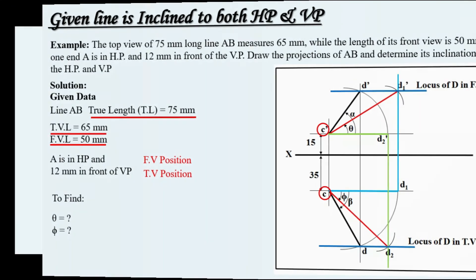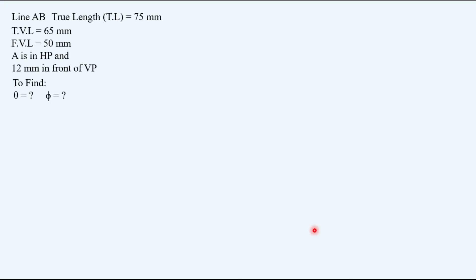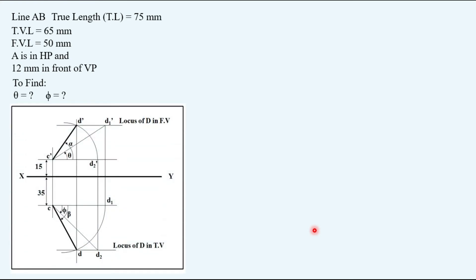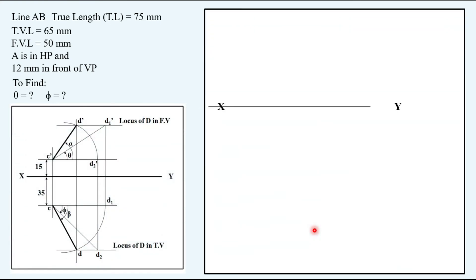Now let's draw it keeping this for the reference. Starting with the XY line, a vertical projector. A is in HP so its front view will be on XY line. It is 12 mm in front of VP so it is in first quadrant according to which the top view should be 12 mm below XY line.